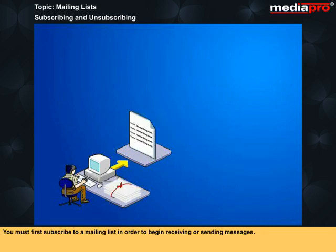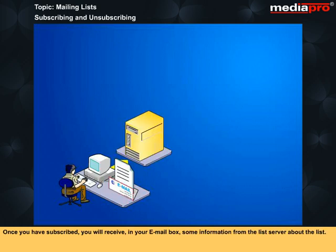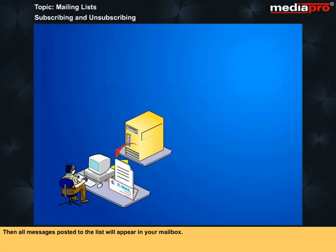You must first subscribe to a mailing list in order to begin receiving or sending messages. The process of subscribing and unsubscribing is easy. All you need is an email package. Once you have subscribed, you will receive in your email box some information from the list server about the list. Then all messages posted to the list will appear in your mailbox.